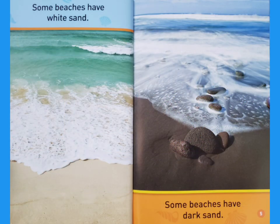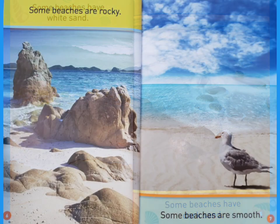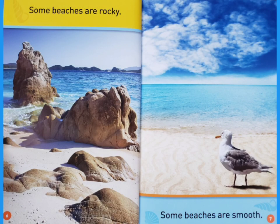Some beaches have white sand. Some beaches have dark sand. Some beaches are rocky. Some beaches are smooth.